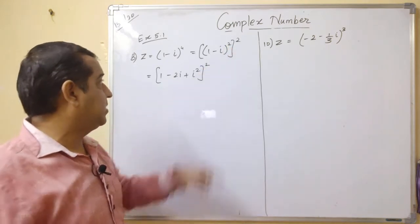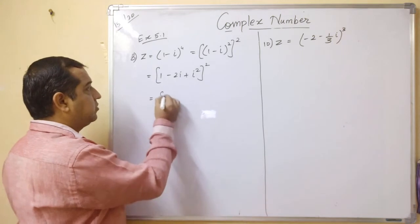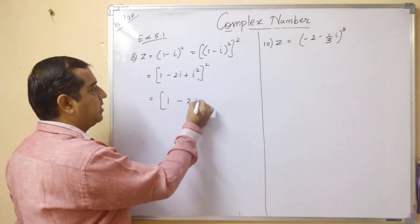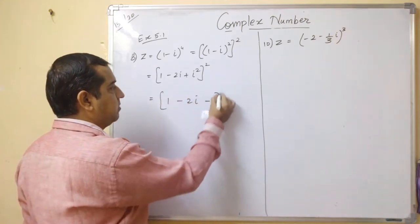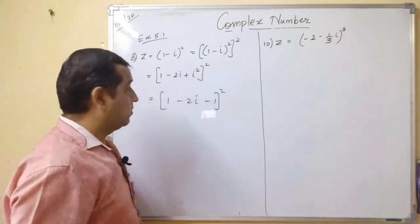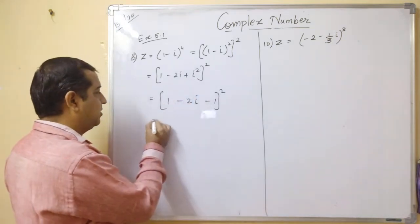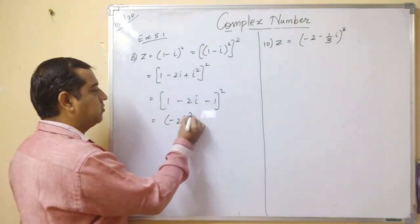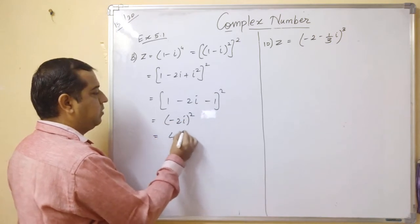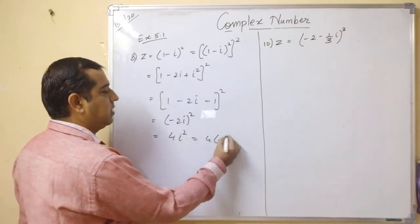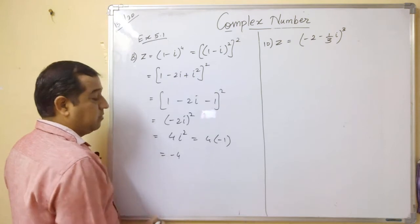We expanded the square. We get a square minus 2ab plus b square. This leads to 1-2i minus 1 bracket square. The i square becomes minus 1. 1 and 1 get cancelled, you get minus 2i square of it. This gives you 4i square. This is 4 into minus 1. Answer is minus 4.